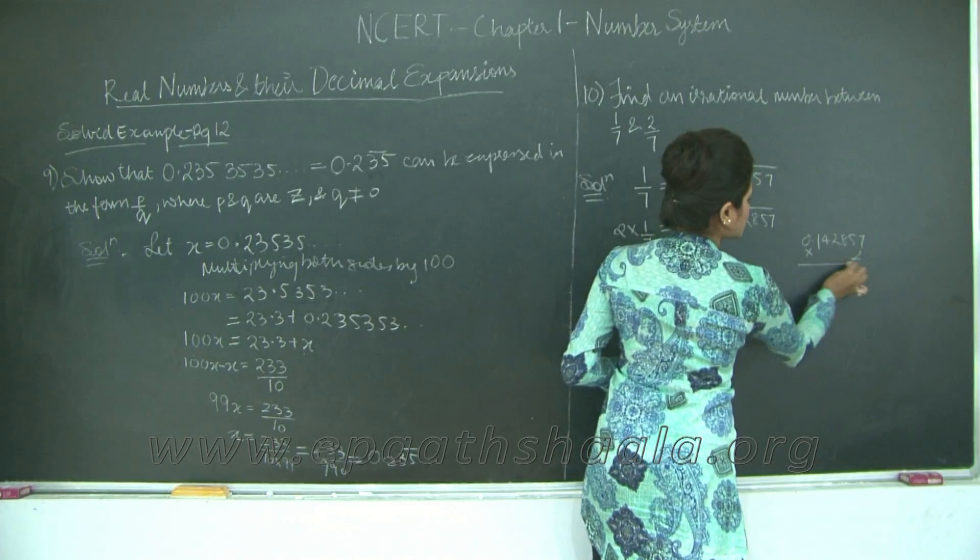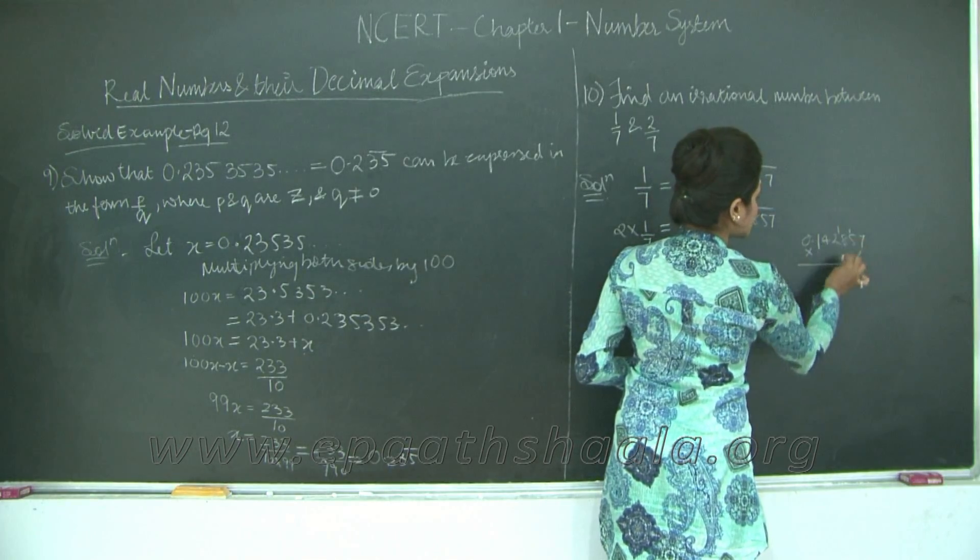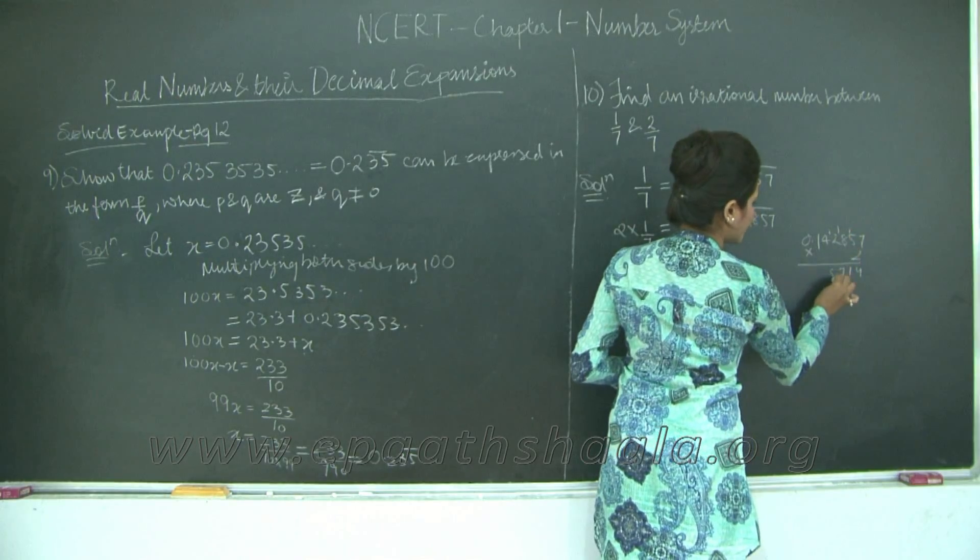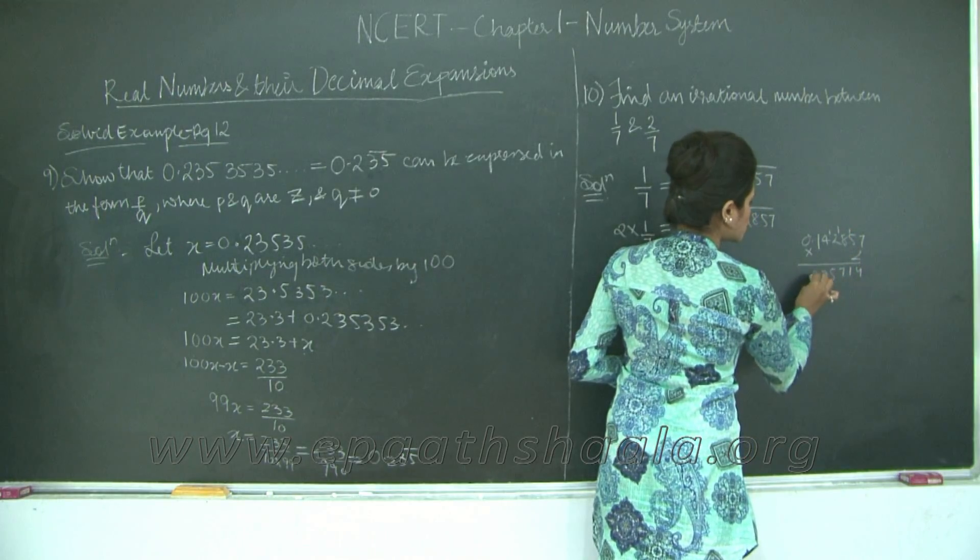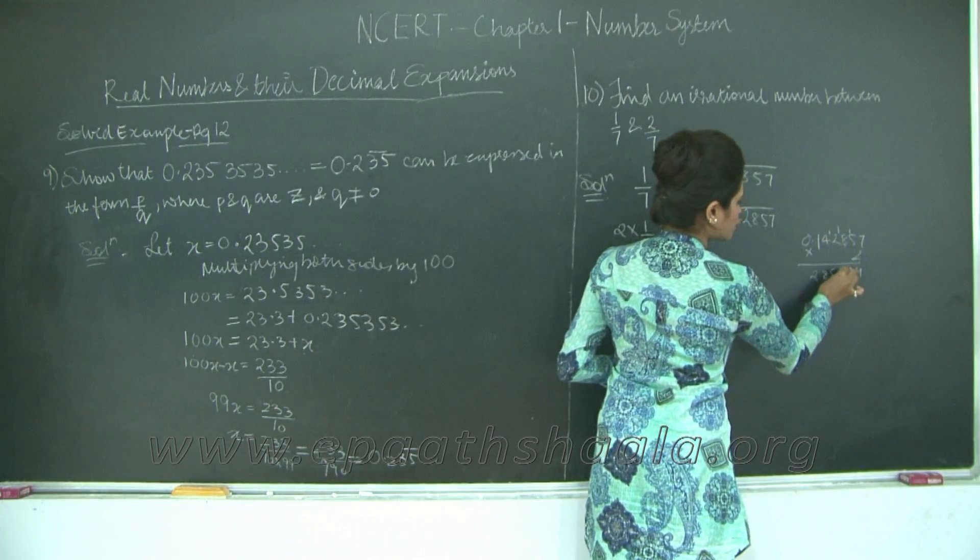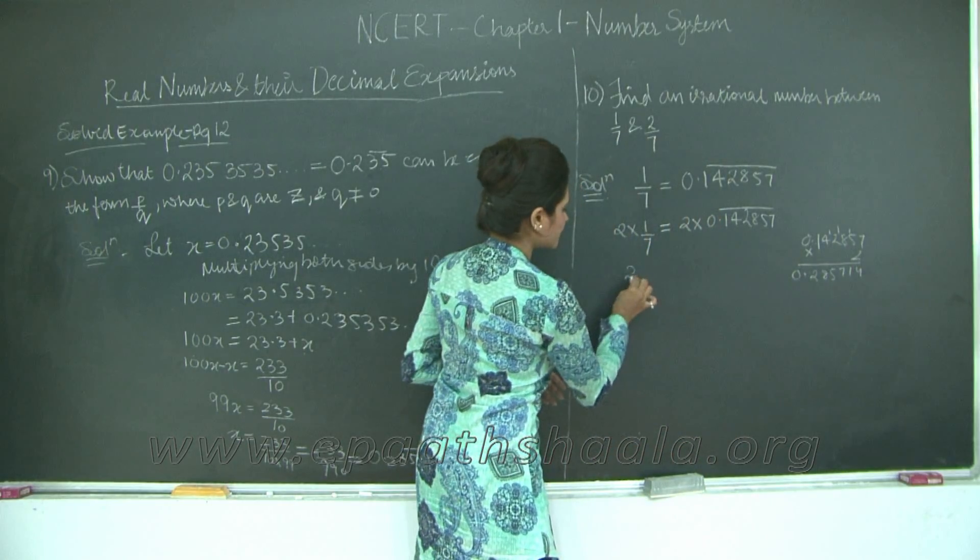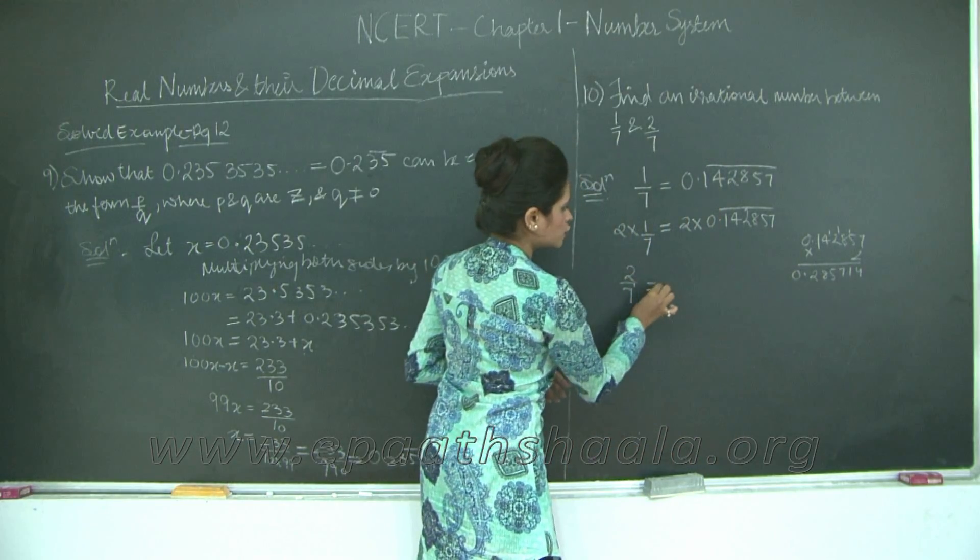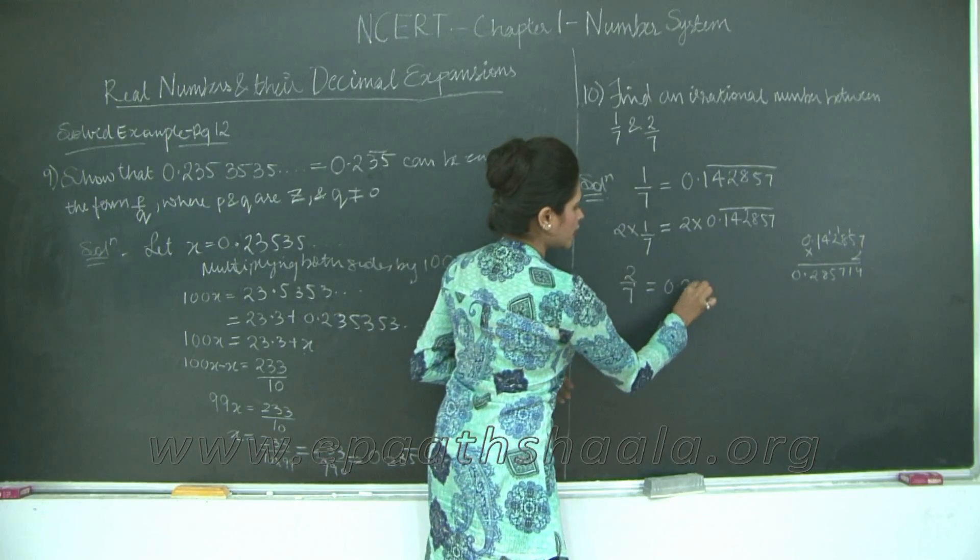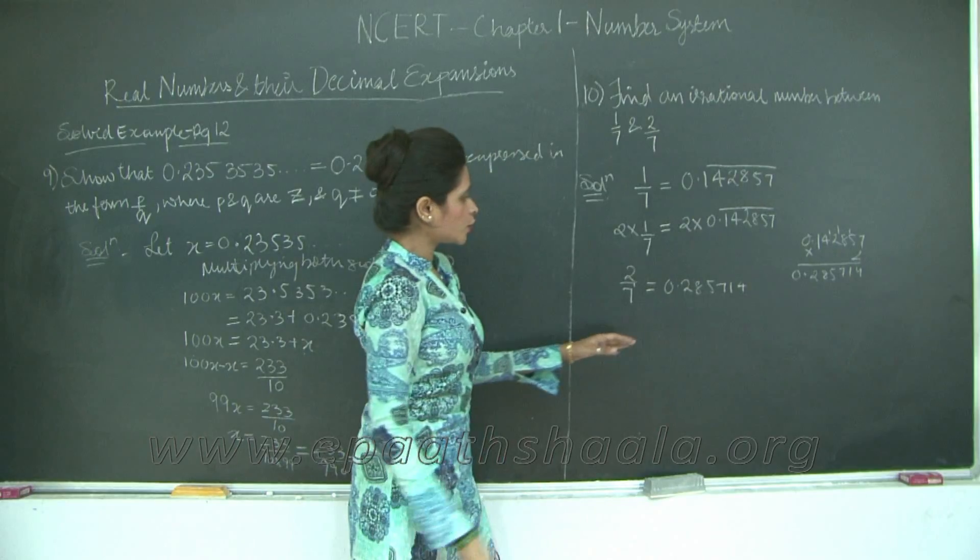I get 0.142857 times 2. Calculating: 2 times 7 is 14, 2 times 5 is 10 plus 1 is 11, 2 times 8 is 16 plus 1 is 17, 2 times 2 is 4 plus 1 is 5, 2 times 4 is 8, 2 times 1 is 2. So 2 upon 7 equals 0.285714 bar.